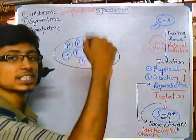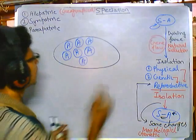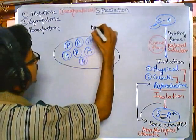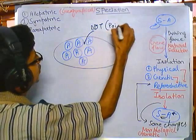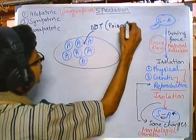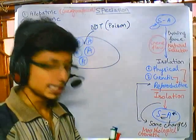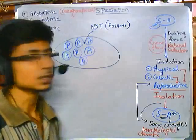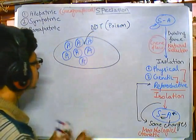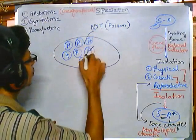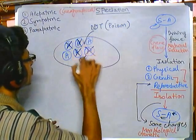Now, what will happen if we apply a driving force — a selection pressure — to them? For example, we start adding DDT, which is a poison. When DDT is added in higher amounts, it acts as a poison and will soon kill most of the members of species A.